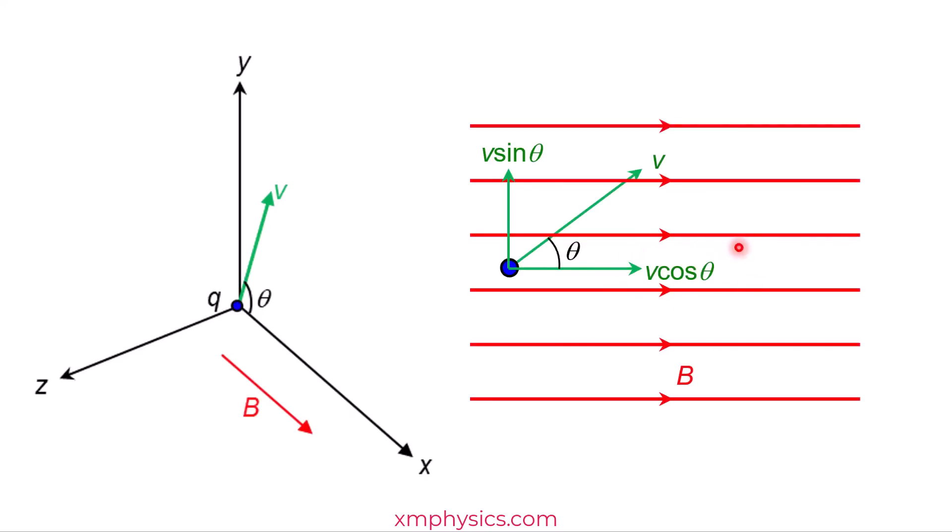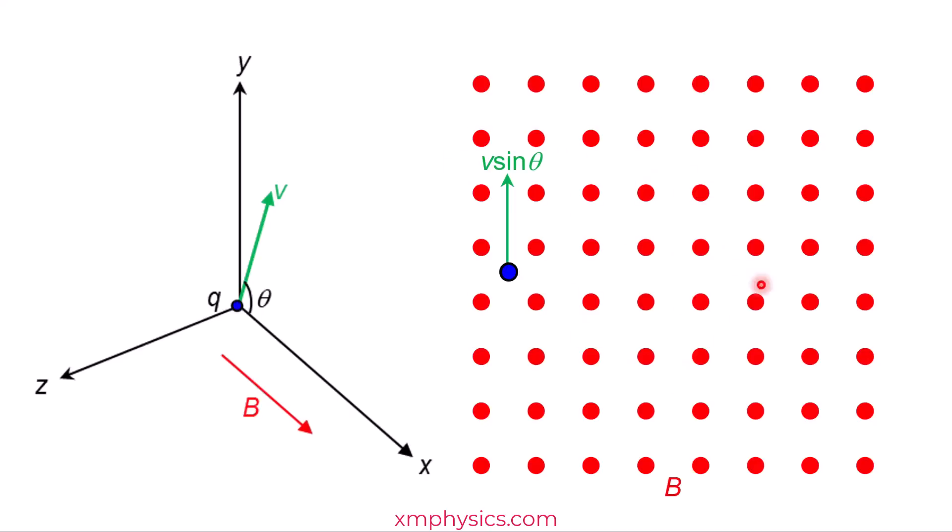Now let's pretend there's no V cosine theta, and all we have is V sine theta. This diagram here is drawn looking into the negative X direction. So we are looking this way. That's why the magnetic field looks like it's coming out of the screen. And V sine theta looks like a vertical vector. So this velocity is perpendicular to the magnetic field.